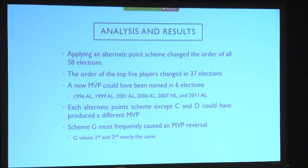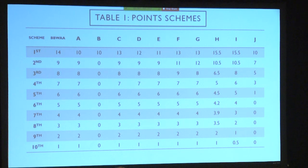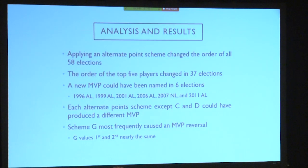I did that analysis for all 58 elections. I took the ballot results and applied the ten different alternate schemes to see how many elections from 1990 to 2018 could have produced a different MVP. Just like Benoit found, in every single election one of the rankings of the finalists would have changed. In 37 elections the top five would have changed, and in six elections — this is the big part — we could have had a different MVP under one of these reasonable point systems. Every single scheme except C and D, which decrease the first-place gap to 13-9-8 and 12-9-8 respectively, could have produced a different MVP. C and D did not produce major reversals, so it makes sense they wouldn't matter much. But in every other scheme, the MVP would have been different.